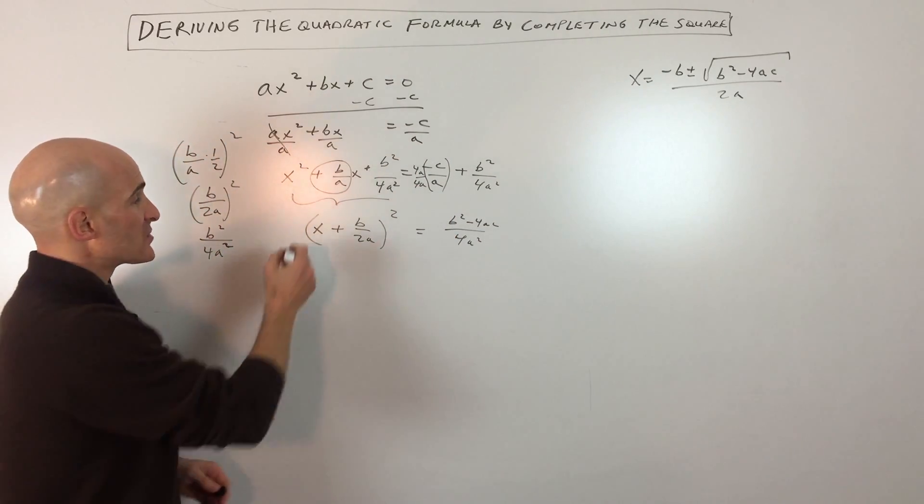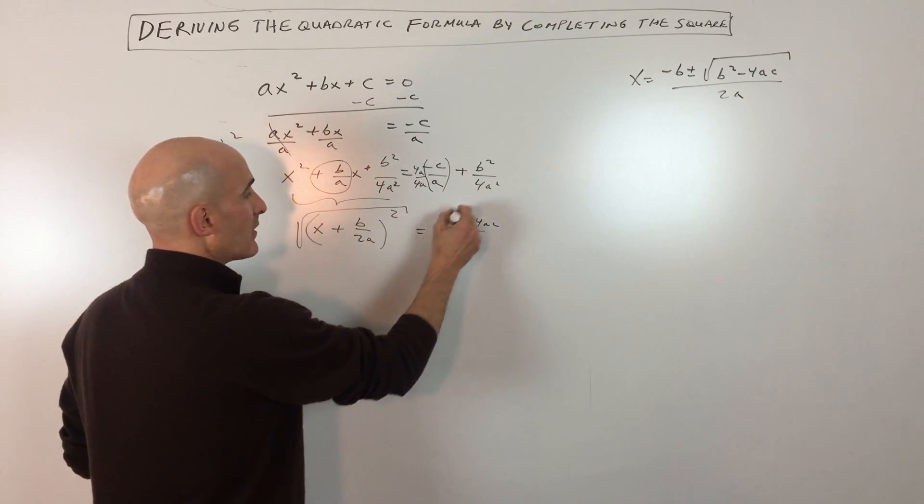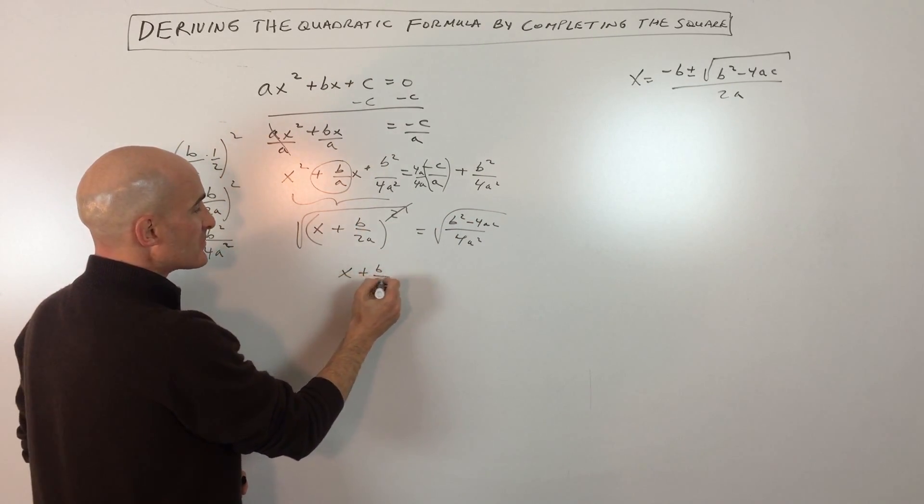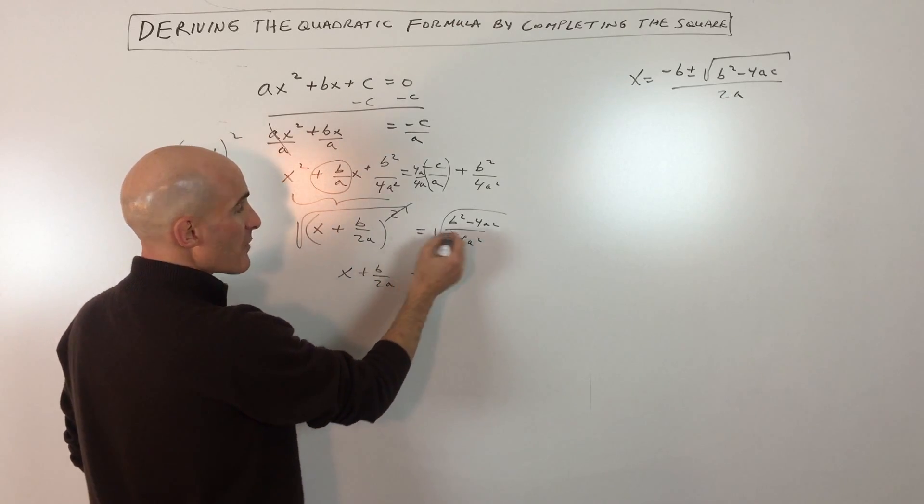Now we're going to take the square root of both sides, and the square and the square root, those cancel each other out, so we just have x plus b over 2a equals, now remember when you take the square root of both sides of the equation,